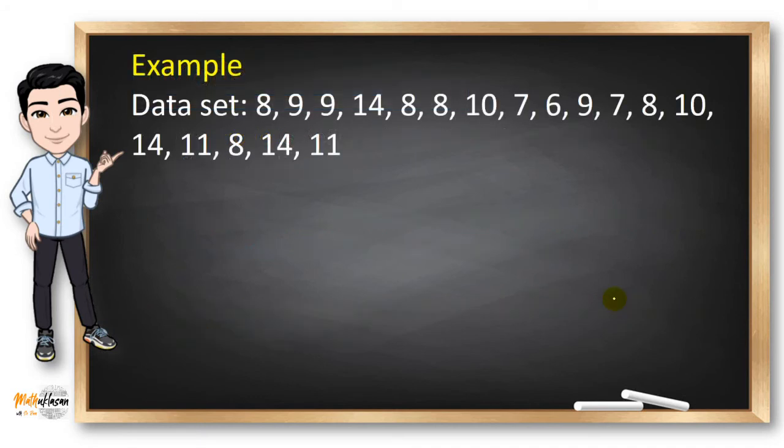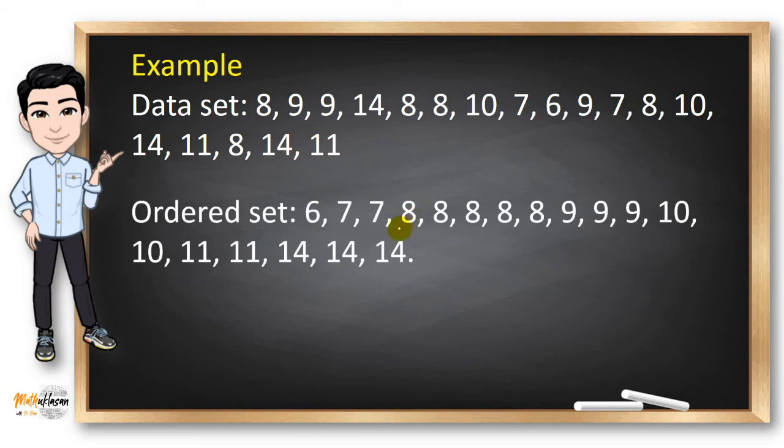For example, to get the mode of the data set, we need to arrange the set in order. And by identifying the frequency for each of the data, we can identify the most frequent data. So the frequency of 8 is 5, and for 9, the frequency is 3. And for 10, we have 2. For 11, we have 2. And for 14, we have 3.